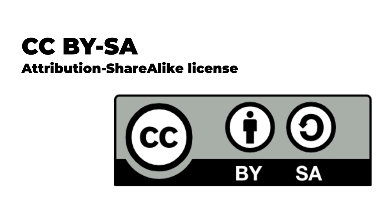The Attribution ShareAlike license, or BY-SA, allows people to use a work for any purpose at all, as long as they give attribution to the creator, and make any adaptations that they share with others available under the same or a compatible license. This ensures that a work that is freely available to use and reuse remains freely available. BY-SA is Creative Commons' version of a so-called copyleft license. It is the license required for content uploaded to Wikipedia. Remember, ShareAlike only applies to adaptations of the licensed work. If you reuse a BY-SA licensed work without modifying it, you are not required to license your work with ShareAlike. For example, you are free to use a BY-SA licensed photo in a PowerPoint presentation and license the presentation with CC BY, as long as you make it clear that the image retains its original BY-SA license.